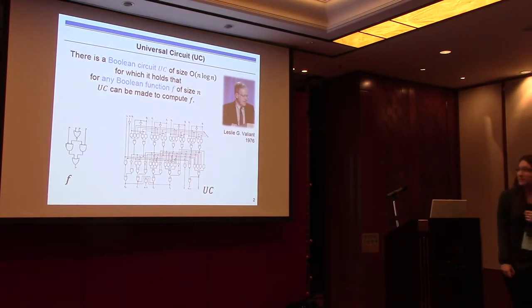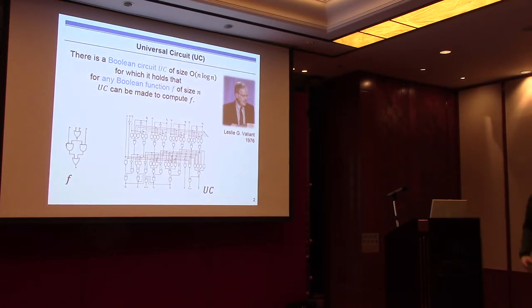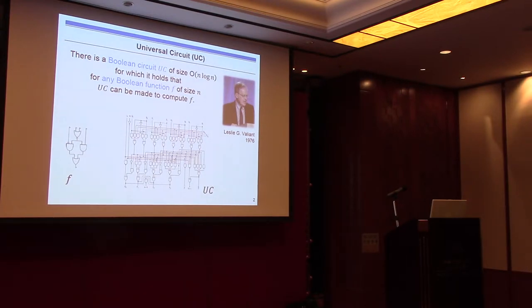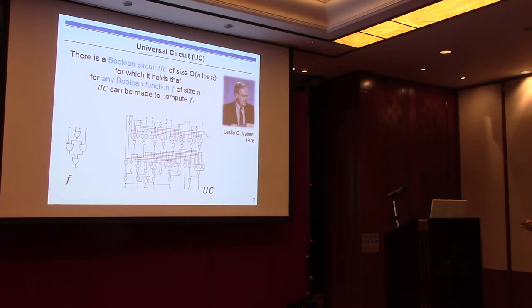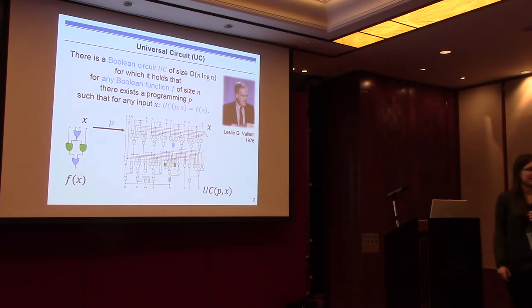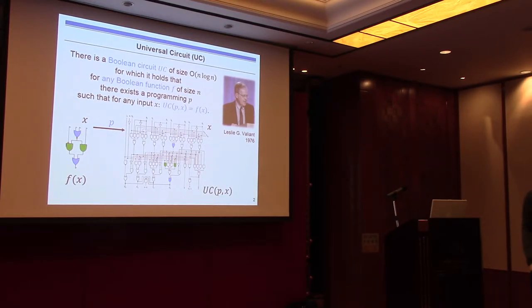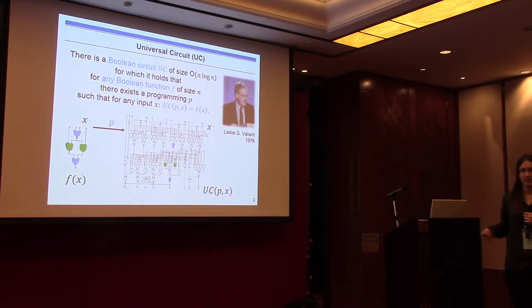Universal circuits were proposed by Leslie Valiant in 1976. He defined it as follows: there exists a Boolean circuit of size O(n log n), for which any Boolean function of at most size n can be made to compute. We can compute any functionality with this universal circuit by inputting programming bits as an additional input, and it will compute our functionality on the original input.